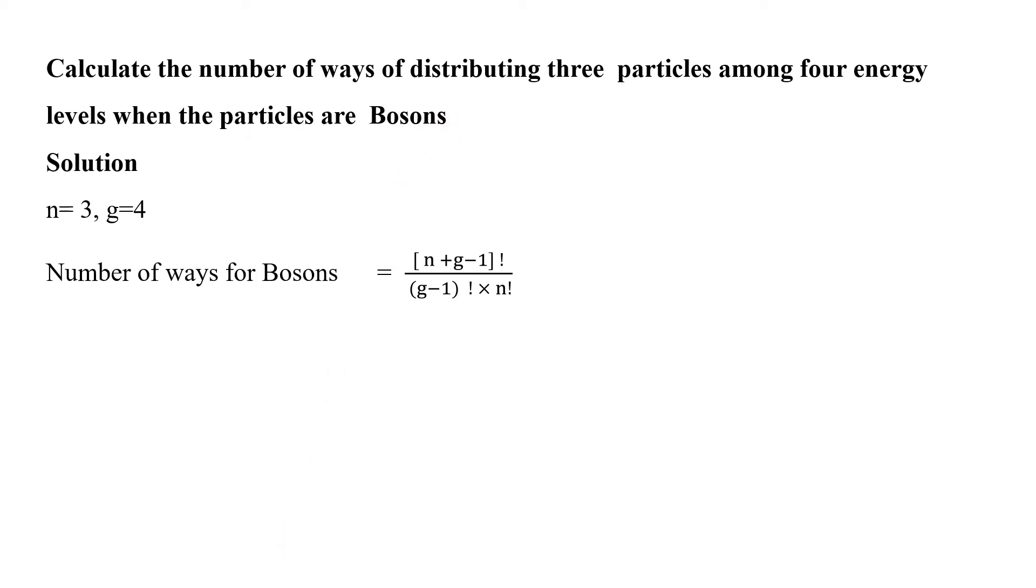We have n equals 3 particles and g equals 4 energy levels. We'll use the Bose-Einstein formula. The number of ways for bosons is: n plus g minus 1 factorial divided by g minus 1 factorial into n factorial.